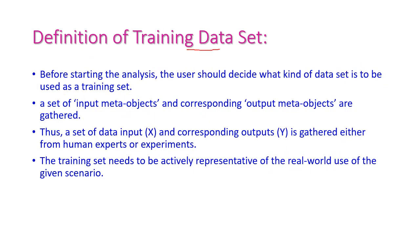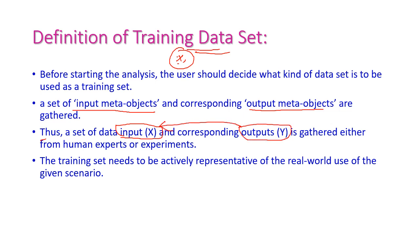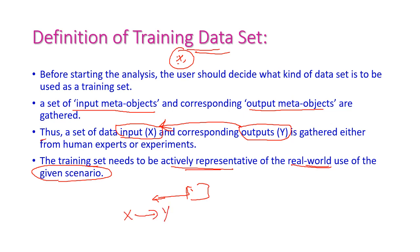The next step is defining the training data set, which is the most important step in supervised learning. We need to gather a set of input objects X and their corresponding output Y. The training data set needs to be actively representative of the real-world use of the given scenario, because the machine will learn based on this. If the machine learns properly from input X producing output Y, then future inputs X will be correctly classified into Y.